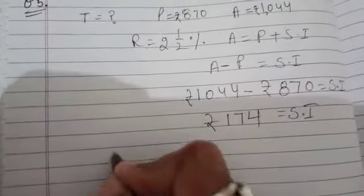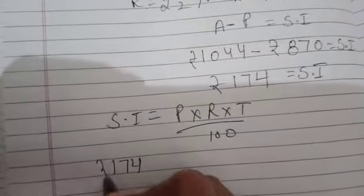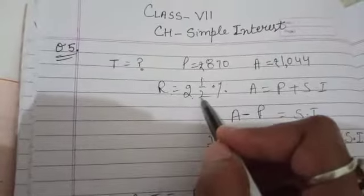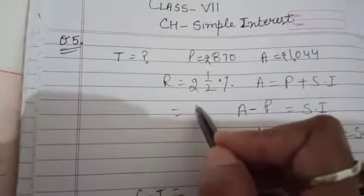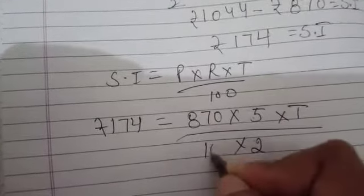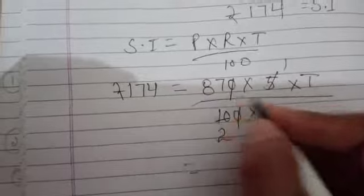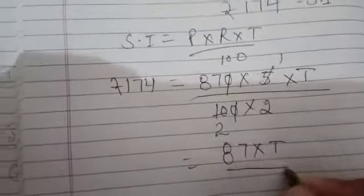So now simple interest we got. Principal is there. Rate is there. We will find the time by putting in the formula of simple interest P into R into T over 100. Now start putting the values. 174 rupees equals principal is 870, rate is 2 whole 1 by 2. Now change the mixed fraction. 2 into 2 is 4 plus 1, 5 over 2%. Right? So 5 over 2. T we have to find. 5 over 2 now. So 2 will be there, 4 into 100. 0 will be cancelled. 5 once is 5, 5 to the 10.